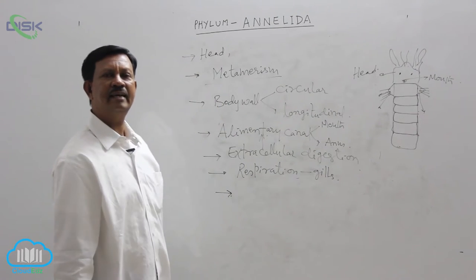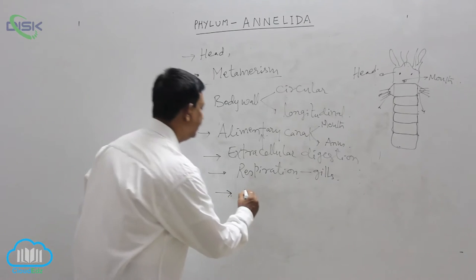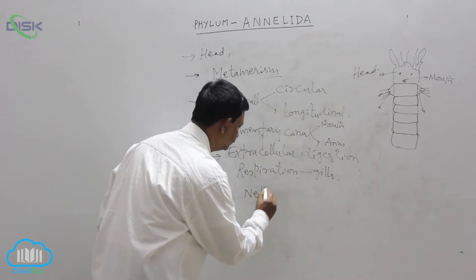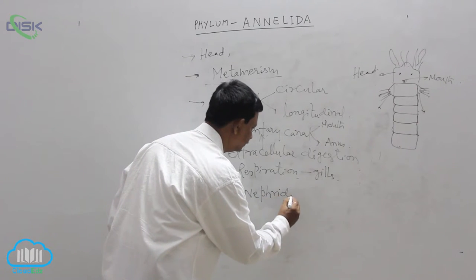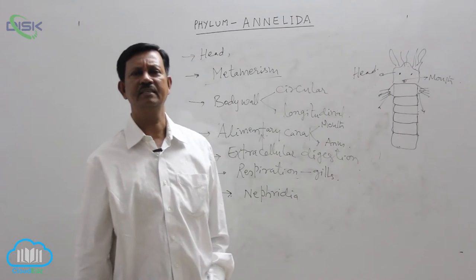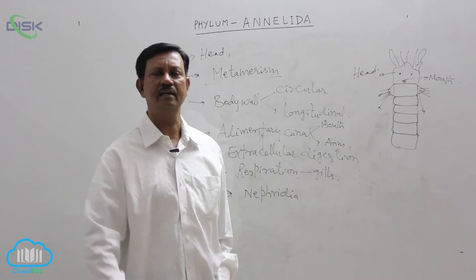Excretion. The main excretory organs are nephridia. There are different types of nephridia present in different animals. For example, you can take earthworm.